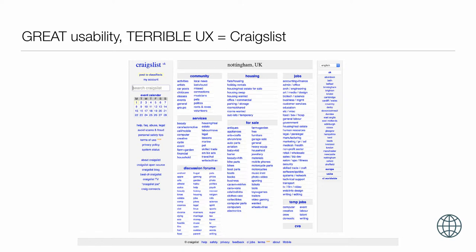Craigslist is an example of a website with great usability but terrible experience. You can find things really easily on Craigslist — it's simple, the colour contrast is good, it's not gimmicky, it's quite easy to find a beauty service or a gardening thing. But do you want to use it? No, it's not satisfying or enjoyable. It doesn't give you a great warm feeling in the same way eBay might. Usability must not come before the experience. Create the user experience first, get that vision, really hone what the product is, and then make it usable.